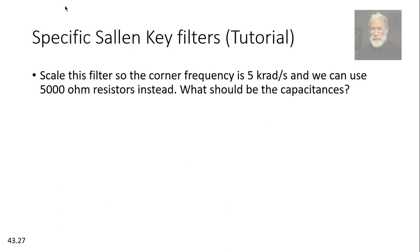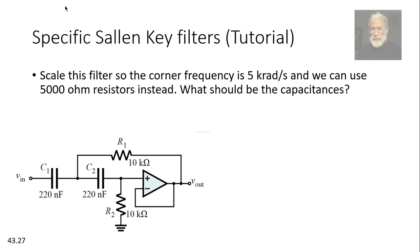Now, tutorial time. Scale this filter so that the corner frequency is 5000 radians per second. And so that we can use 5 kilo ohms resistors instead of the resistors that you see in the circuit, 10 kilo ohms. What should be the values of the capacitances? Well, km is already given. The resistors were 10,000 ohms and now they're going to be 5,000 ohms. Km is 0.5. But what is kf? I don't know.